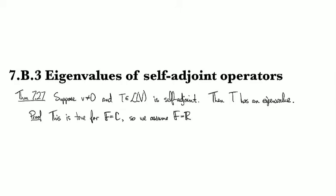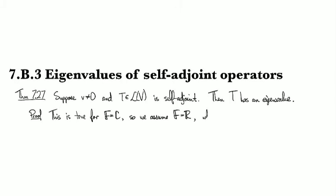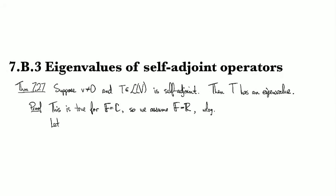Okay, so let's take n to be the dimension of our vector space, and we're going to pick some non-zero element v because V is not the zero vector space.